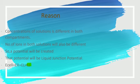We use liquid junction potential value of zero because a salt bridge will control the potential problem. So we see the explanation.